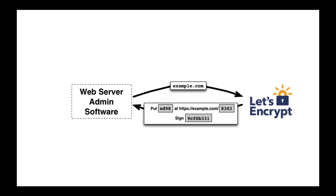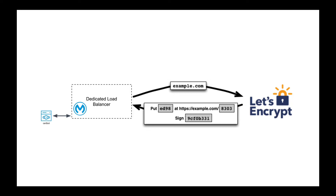Let me give you a high-level background on how this is going to work. Generally you have a web server that you want to create a CA cert for, and what Let's Encrypt will do is have an agent on the web server that will set a challenge, then Let's Encrypt will validate that challenge and generate a CA cert. With Mule and the dedicated load balancer, that dedicated load balancer will act as the web server, and you're going to deploy a Mule app behind the dedicated load balancer that will allow you to set the challenge and validate against Let's Encrypt to generate the CA cert.